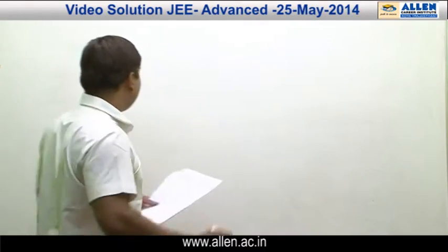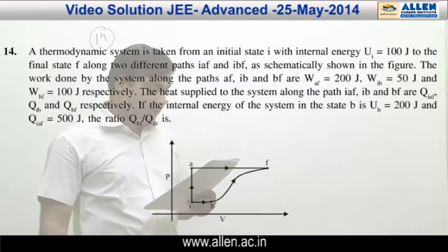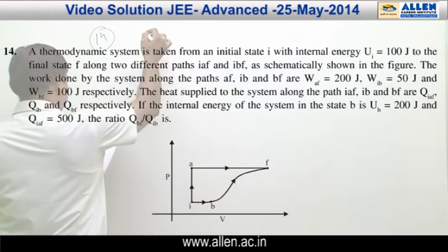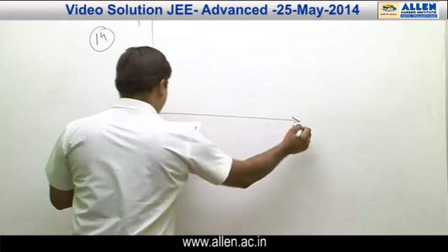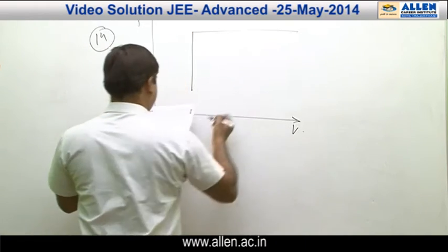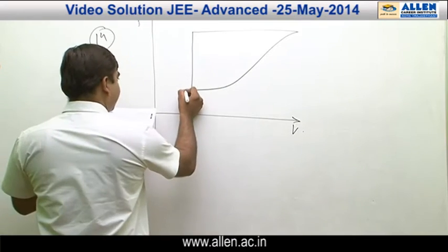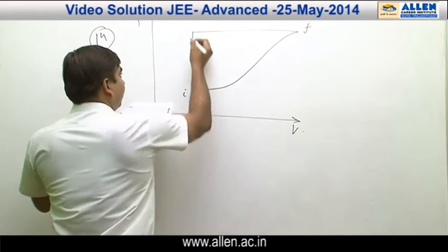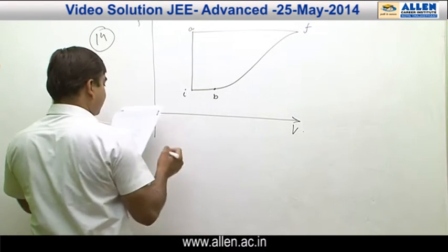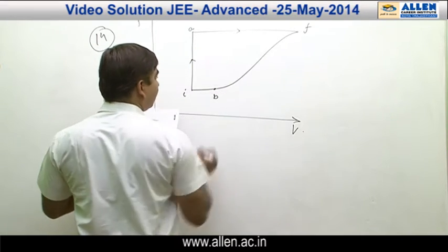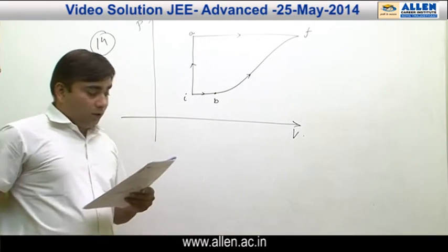Now let us come to question number 14. Question 14 is a question on thermodynamics. The question says there is a thermodynamic system taken from some initial state i. There is a P-V diagram — pressure-volume diagram — given. From i to f there are two paths that can be followed: path i-a-f and another path i-b-f, where b is somewhere on the straight line. He has given us some information.